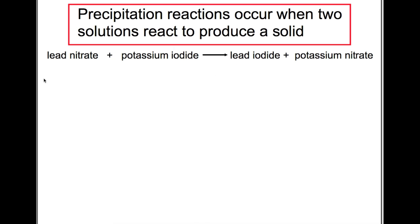To know which of the two products is a solid you need to look that up in the data book. On page 8 you have the solubility table, and you'll find that lead iodide is the solid and potassium nitrate is very soluble, so it is aqueous.